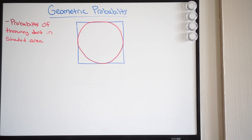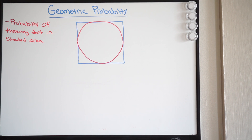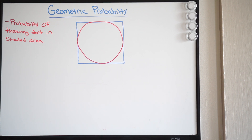Alright guys, so here we have a problem dealing with geometric probability, and in this particular problem we have a circle inscribed within a square. This is more of an advanced math problem, something you would see on maybe the SATs or something in that nature. So let's get into how we're going to solve this.